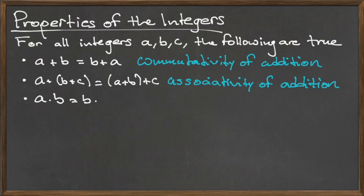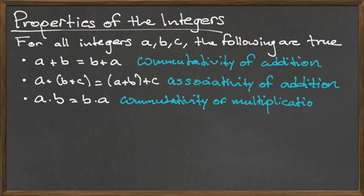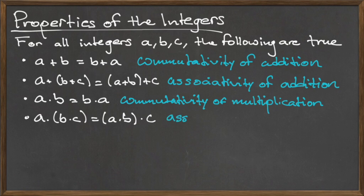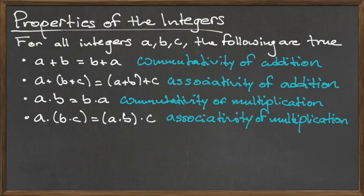The third property of the integers is the commutativity of multiplication, which states that for any two integers A and B, A times B is equal to B times A. Like with addition, this property states that the order of the multiplication of two integers does not matter. The fourth property is the associativity of multiplication, which states that for any integers A, B, and C, A times the quantity B times C is equal to the quantity A times B times C. Like with addition, this property states that the order in which you multiply groups of integers does not matter.